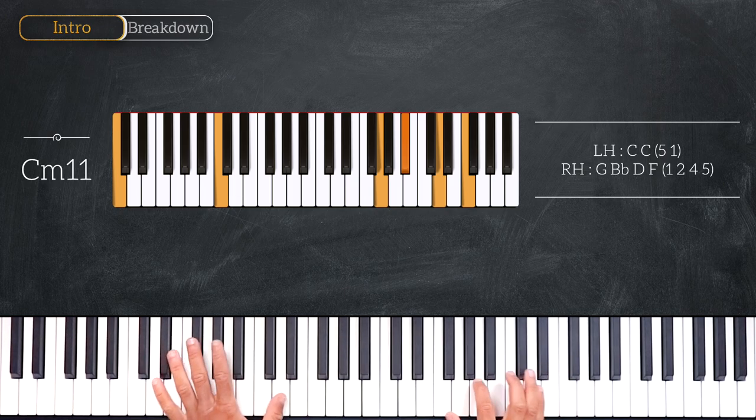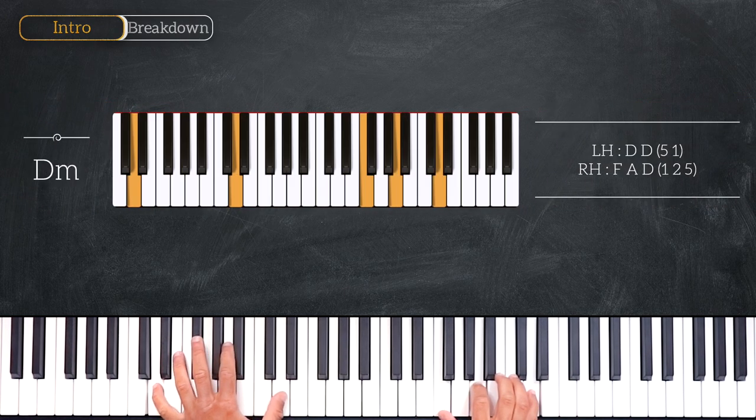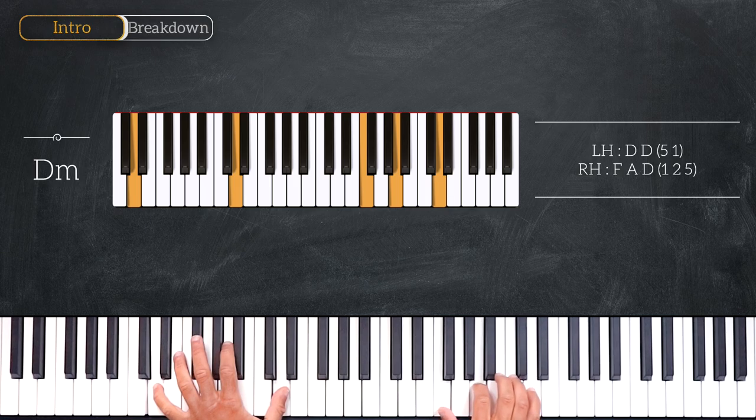Then right after, we'll play this D minor, playing octave D on the left, F, A, D on the right.